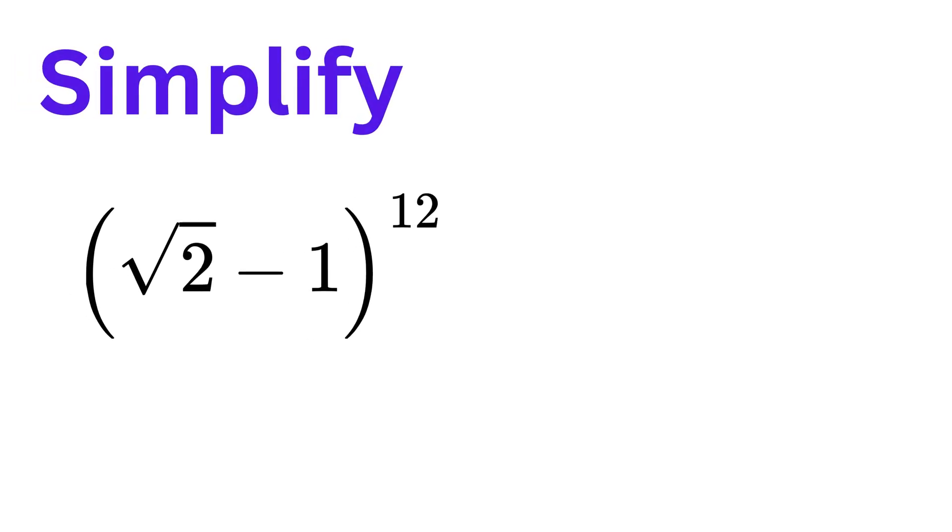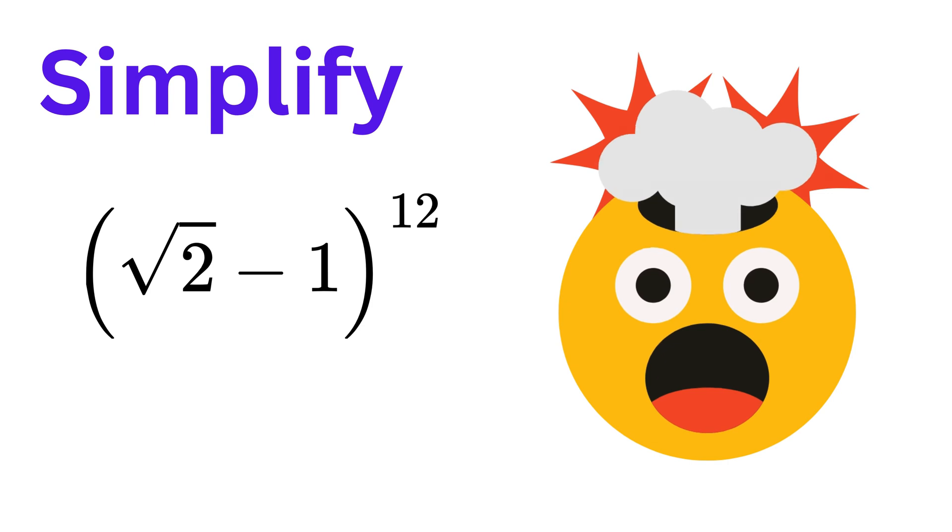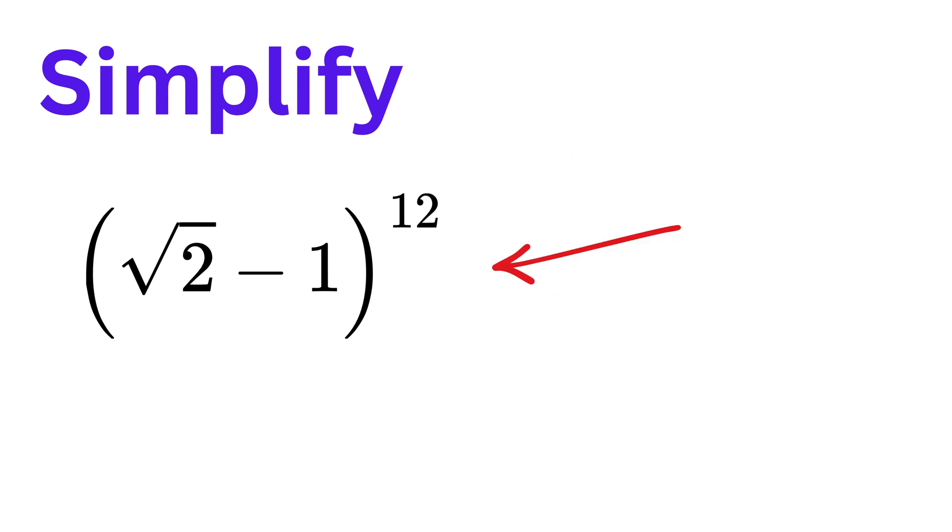The method with which we will solve this question will simply blow your mind. Today we need to simplify the expression (√2 - 1)^12 into the form a + b√2